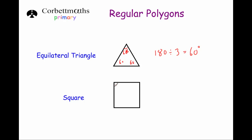In a square, all four angles are right angles and therefore they are all 90 degrees. To show that, we note that the angles in a quadrilateral add up to 360 degrees, and if we divide it by four — because all four angles in a regular quadrilateral or square are the same — we get 90 degrees.